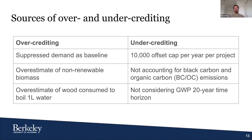For under-crediting, we found that clean water projects are only allowed to issue a maximum of 10,000 credits per year, so any additional credits generated over that cap don't get counted — this is a built-in mechanism of conservativeness but also a source of under-crediting. We also attempt to account for black carbon and organic carbon emissions by estimating the mass of black carbon and organic carbon emitted from wood fuel combustion using unimproved cook stoves, and applying the IPCC GWP values for black carbon and organic carbon. Finally, we consider the GWP 20-year time horizon as a potential additional source of under-crediting.